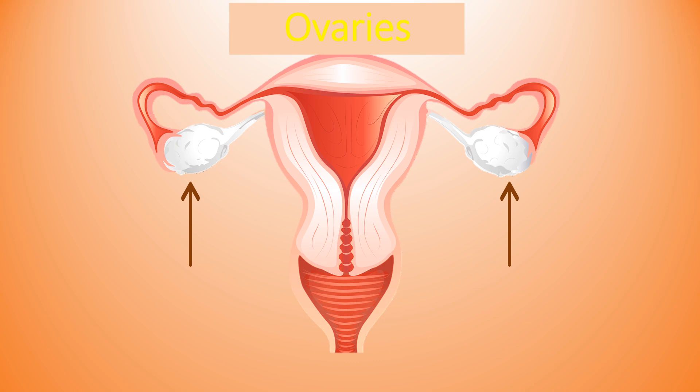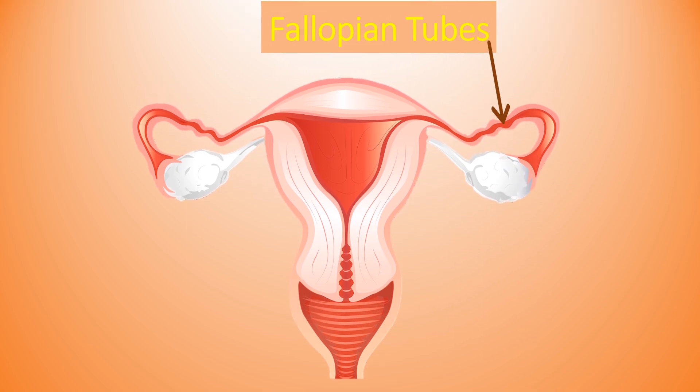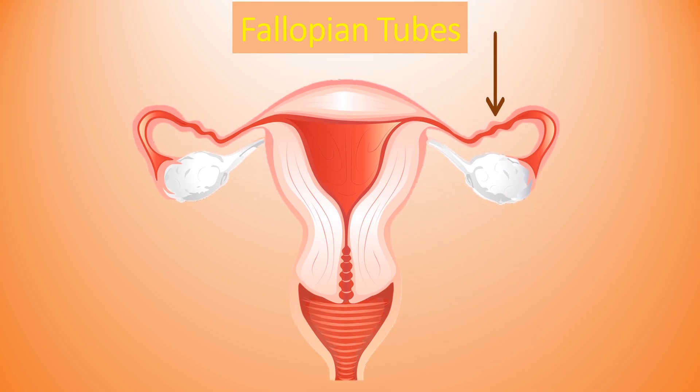Next are the fallopian tubes, also called uterine tubes or oviducts. They are Y-shaped structures found in the female reproductive tract that connect the ovaries and uterus. Fertilization takes place in the fallopian tubes, and after fertilization, the fallopian tube transports the egg to the uterus.